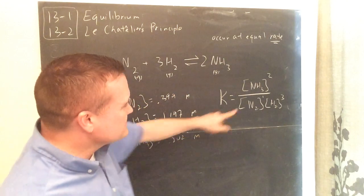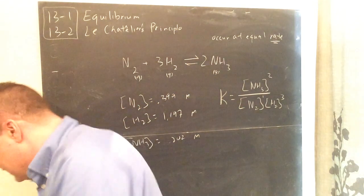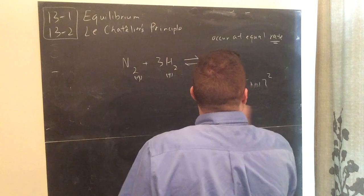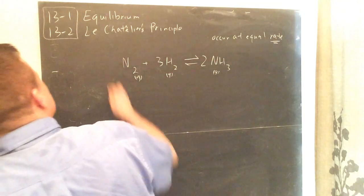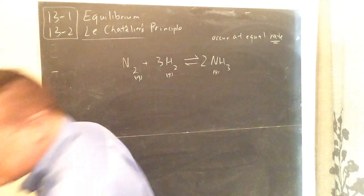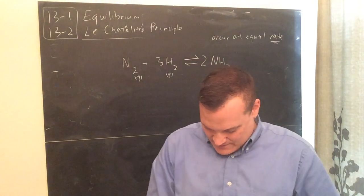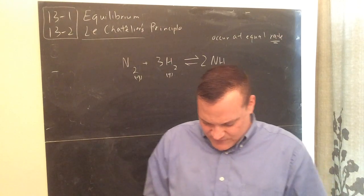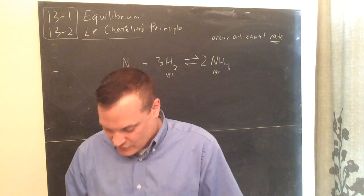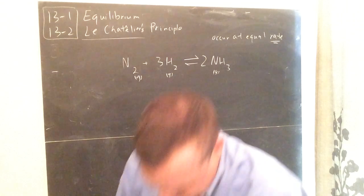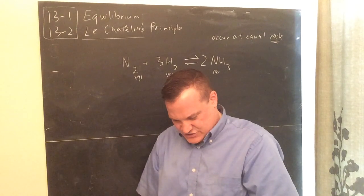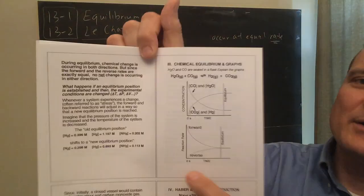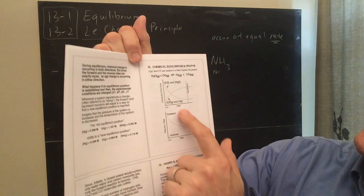The scientist credited with explaining this is Le Chatelier — a French scientist. Before going into his principle, let me say one thing about graphs in equilibrium. There's a graph showing: H₂O and CO gas reacting to produce H₂ and CO₂ — carbon monoxide is essentially pulling an oxygen off the water to make carbon dioxide.